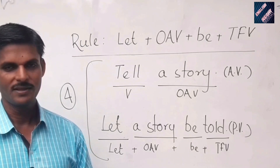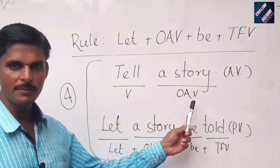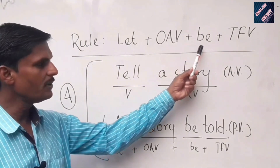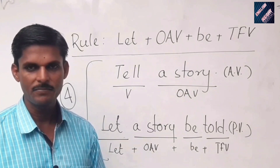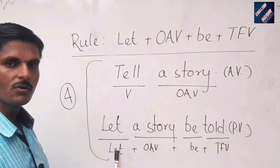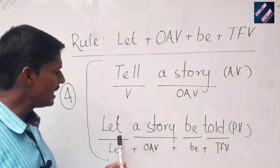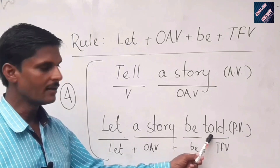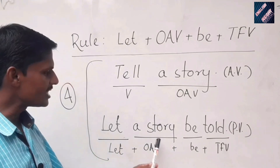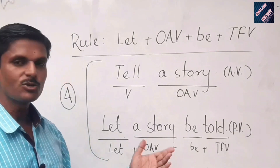Sentence number four: 'Tell a story' — active voice. 'A story' is the OAV and 'tell' is the verb. Applying the rule LET + OAV + BE + TFV: 'let,' then 'a story,' then 'be,' and the third form of 'tell' is 'told.' Active voice: 'Tell a story.' Passive voice: 'Let a story be told.'